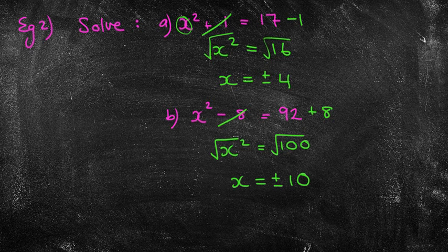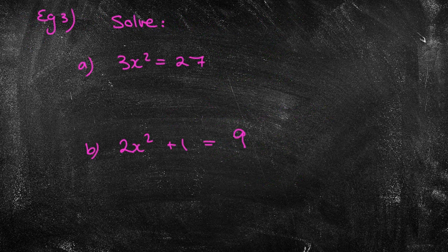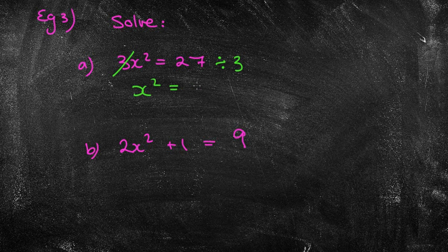Now let's go to example 3, a bit more challenging again. So we've got here 3 times x squared. Let's get rid of the times 3 and do divide by 3. So x squared equals 27 divided by 3 is 9. Therefore, x equals, by square root both sides, plus or minus 3.